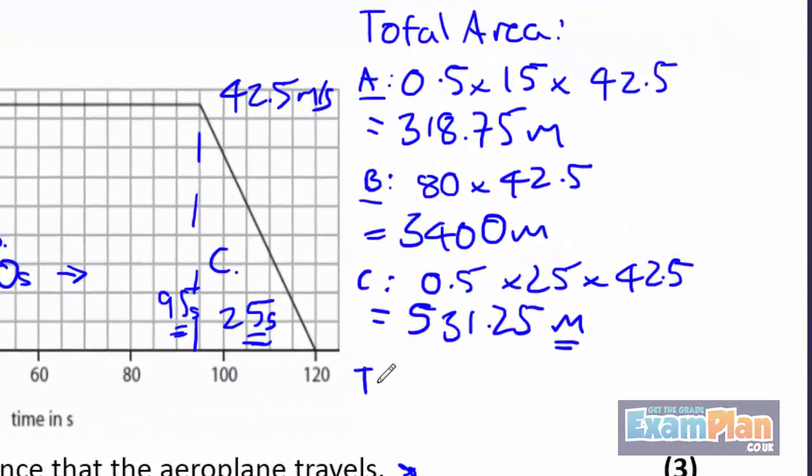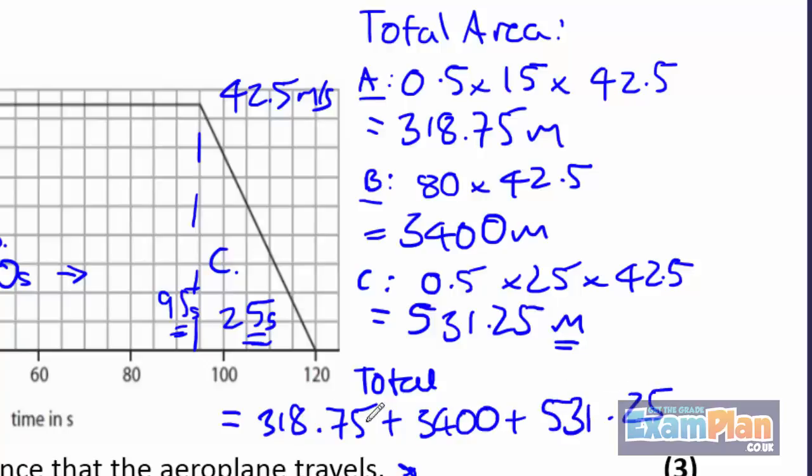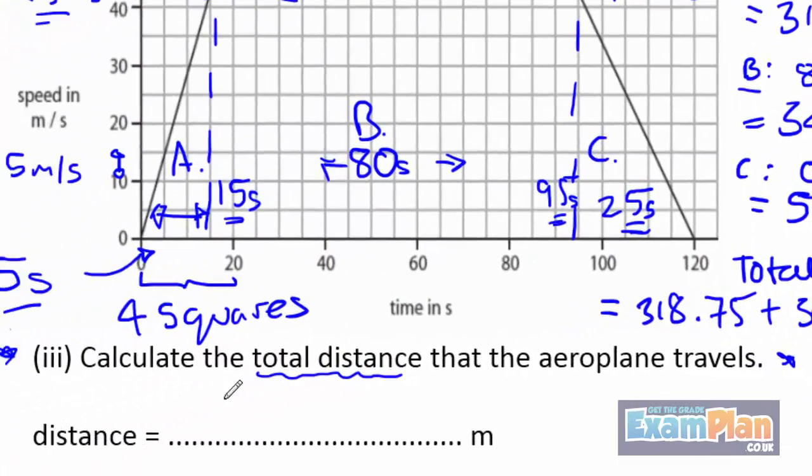The total area is therefore 318.75 meters plus 3,400 meters plus 531.25 meters. The answer is 4,250 meters.